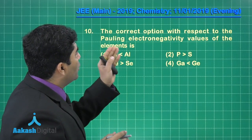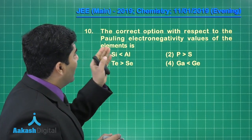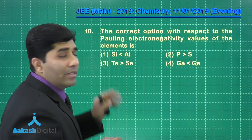The next question: the correct option with respect to the Pauling electronegativity values of the elements is?